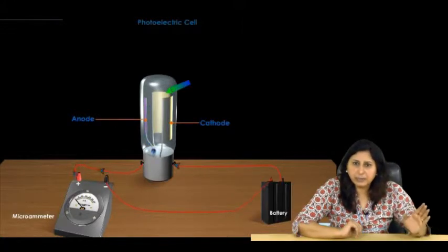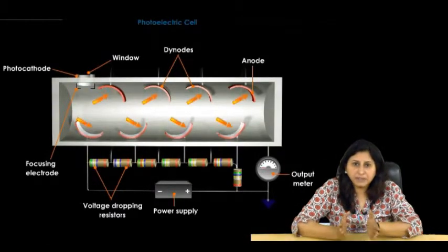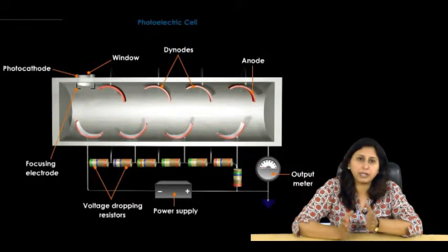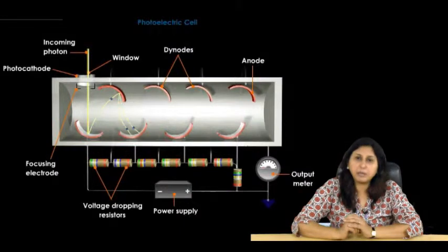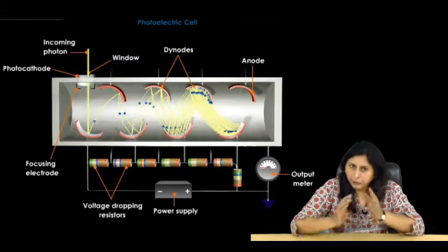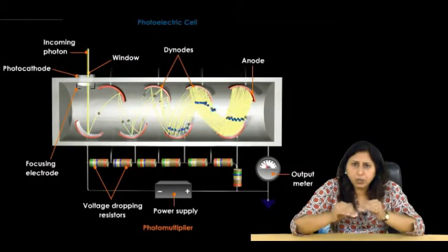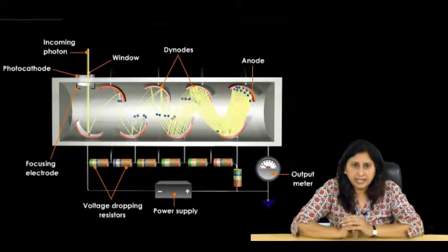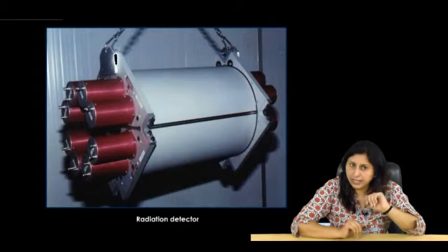If a series of metal plates are arranged in the electron tube, then the photoelectric emission is amplified by secondary electron emission. This type of tube, where there are number of plates, is called a photomultiplier. A photomultiplier is capable of detecting radiation of extreme low intensity. Hence, it is used as a radiation detector in nuclear research.